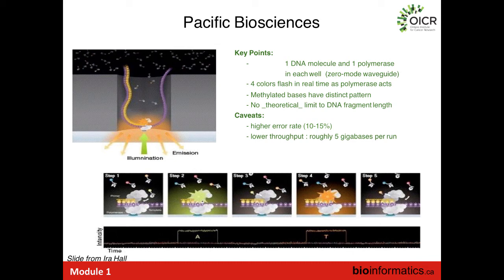The error rate of PacBio is around 10 to 15 percent, and unlike Illumina, the error mode is mostly insertions and deletions — where a base was either erroneously introduced into the base-called sequence or deleted. These are caused by pulses of light that didn't lead to complete incorporations into the growing strand.